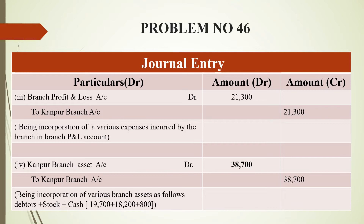The next entry is various branch assets. The journal entry is: branch asset account debited to branch account. The narration includes data, stock and cash — these three assets. So the total is $38,700.